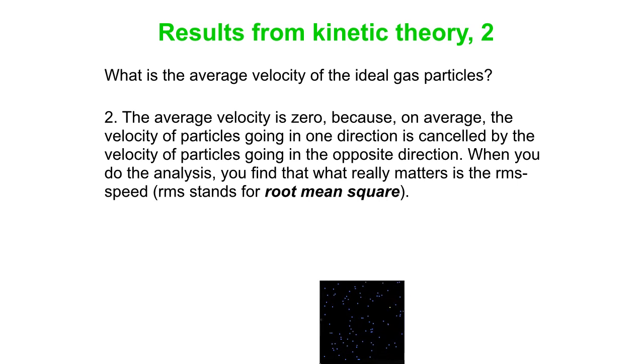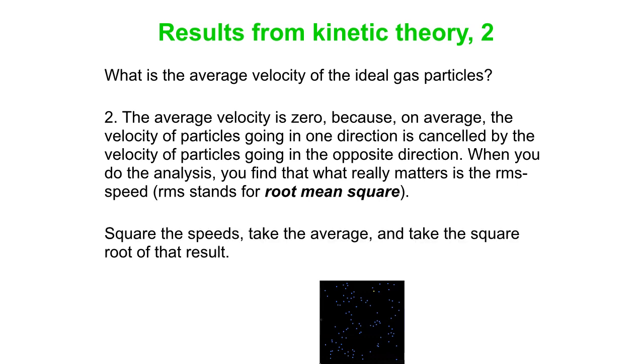So, what really matters, in fact, is the root mean square speed. Okay, so it's not the average velocity that's important, it's the root mean square speed. So you square all the speeds, take the average of those, then take the square root, that's how you do an RMS value. Here it is.